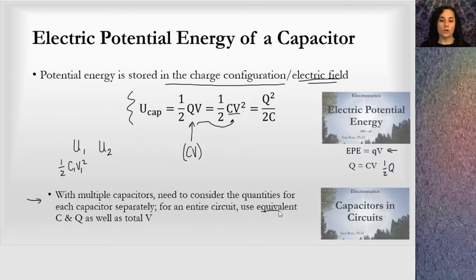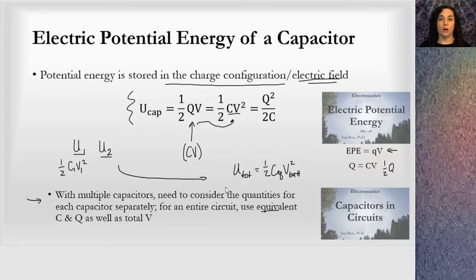Or you can use the equivalent if you're looking at the total circuit. You can say U total for a whole circuit equals one half C equivalent V from the battery squared. And that would be a way to look at the energy for the whole circuit. And notice that the energy on all the individual capacitors would be what adds up to the total energy of the whole circuit.